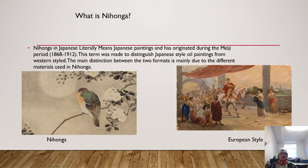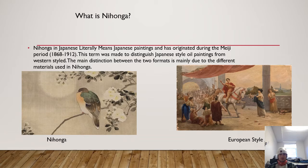Nihonga is a general term for traditional Japanese painting that literally means Japanese style painting. In common use, this term originated during the Meiji period to distinguish Japanese painting from Western style oil painting in Europe. The distinction between Western style oil painting and Nihonga is broadly speaking just the difference in the materials used, and this distinction based on materials continues to be used today.